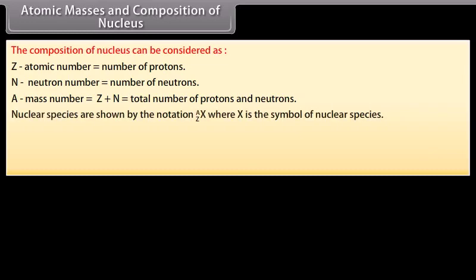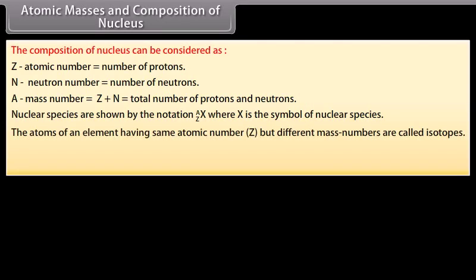Nuclear species are shown by the notation where X is the symbol of nuclear species. The atoms of an element having same atomic number, that is Z, but different mass numbers are called isotopes. For example, isotopes of hydrogen are...